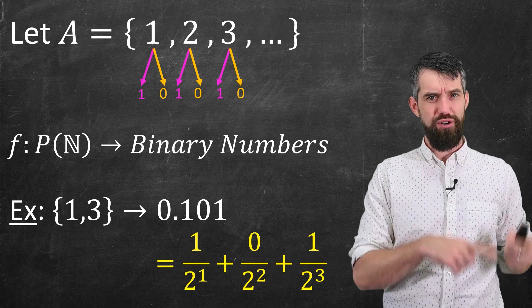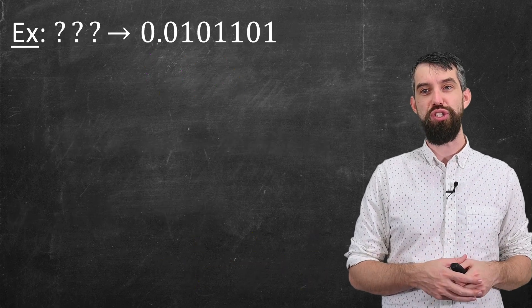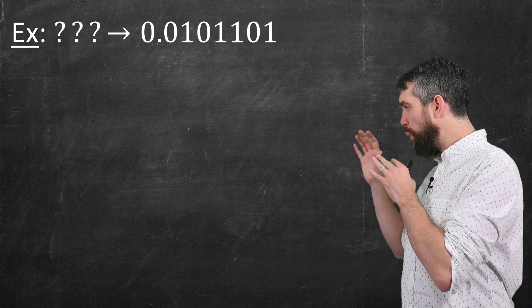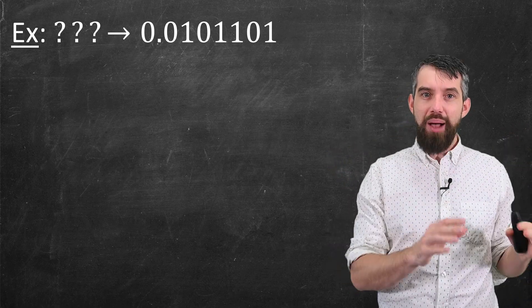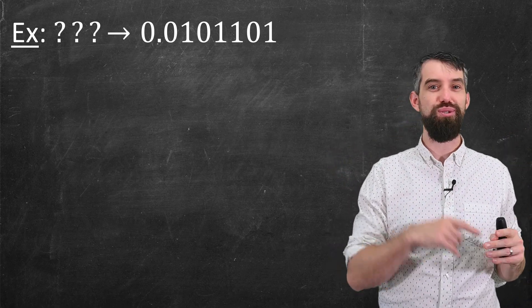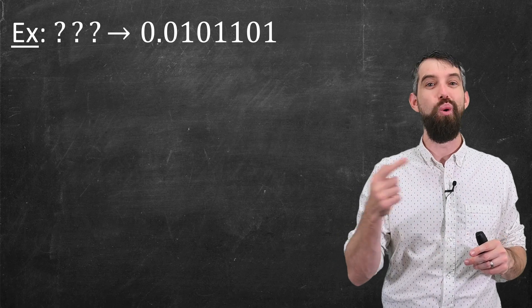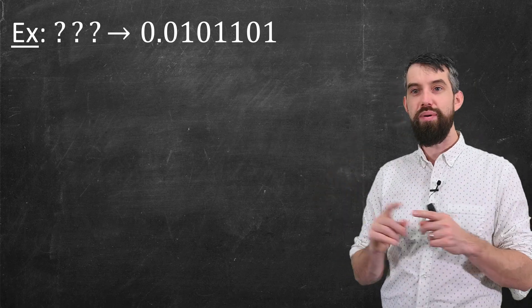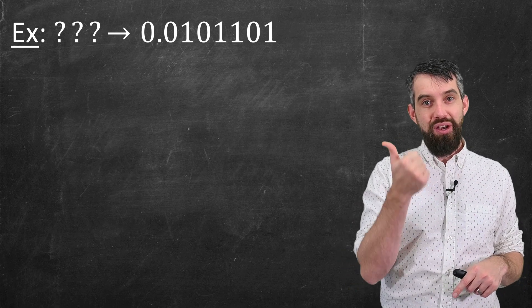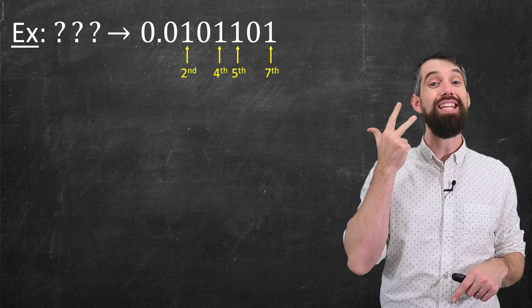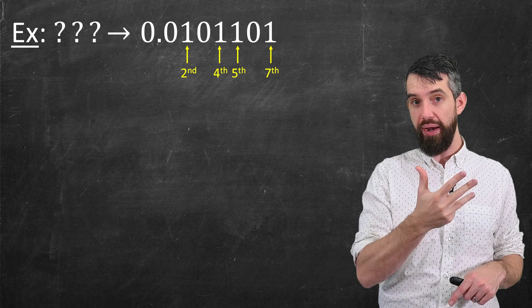so let's do one more example in reverse, just to make sure we understand exactly what this function is doing. I'm trying to think, now, what object, what subset of the natural numbers corresponds to 0.0101101? When I look at this number, I see that there is a one in the second, fourth, fifth, and seventh locations after the point.